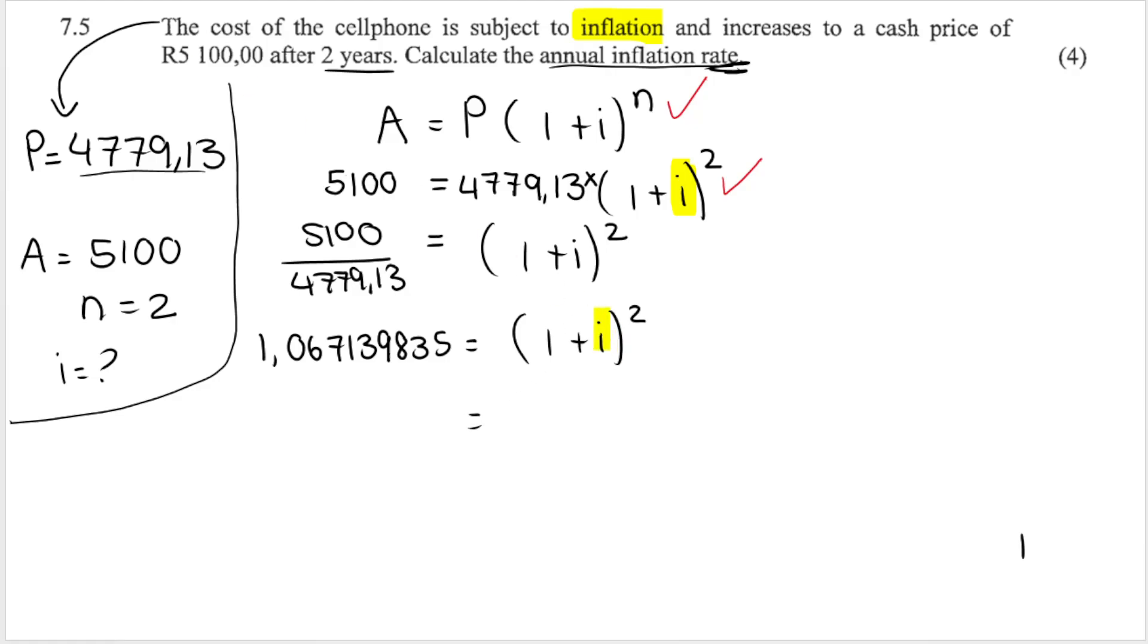Now, we still need to get I by itself. But it is trapped inside a bracket that is being squared. How do I get rid of the square? That's my next step. I have to square root. We square root both sides of the equation. Now, remember, grade 10s, if we square root the right-hand side of the equation, if you square root a square, what ends up happening is the square and the square root end up canceling each other out. So, we'll just be left with 1 plus I. If we square root this side, we get the following answer. Don't round off yet. We're not done with the question.